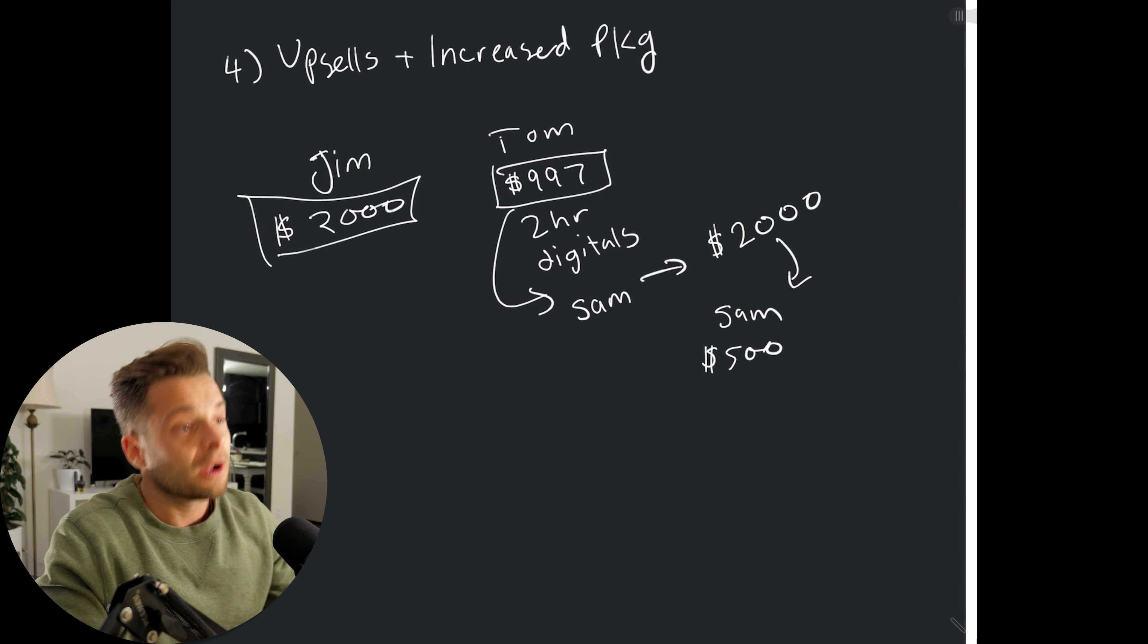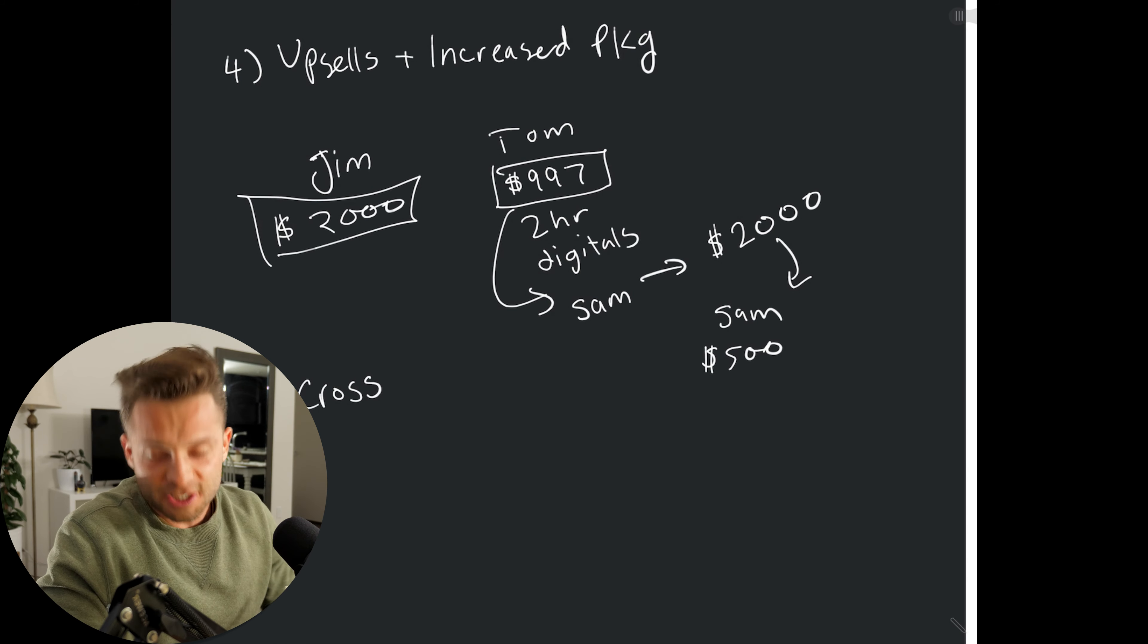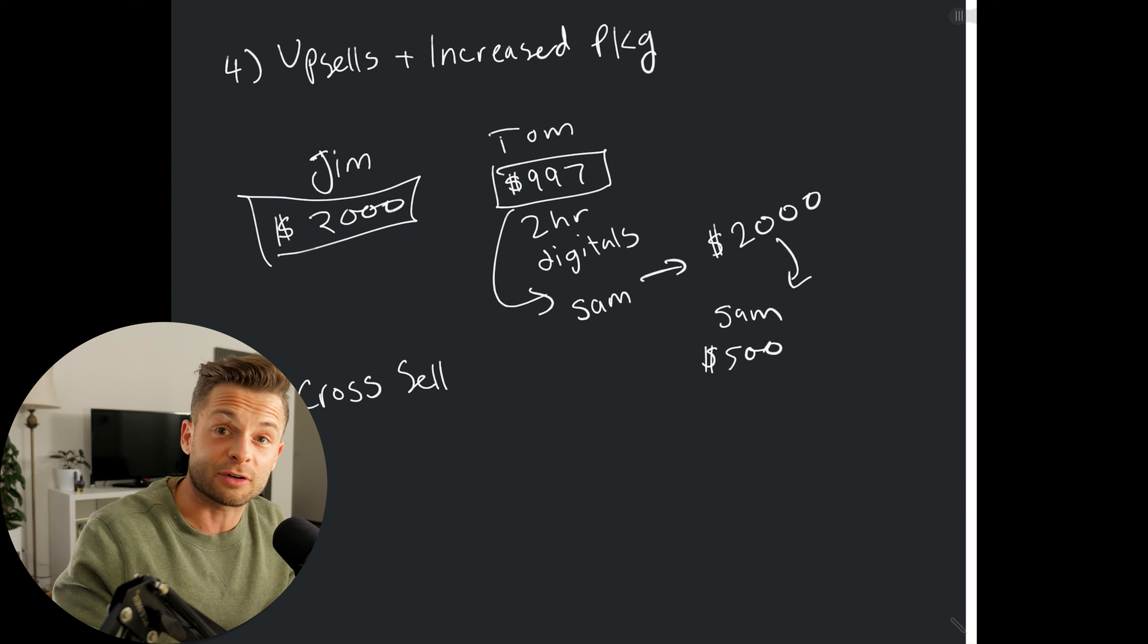Number five, oh, we've got cross-sells. So an upsell is selling more of the same thing, or selling a better version of the same thing. And cross-sell is selling a different thing.